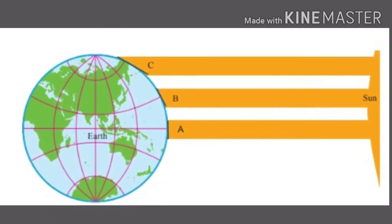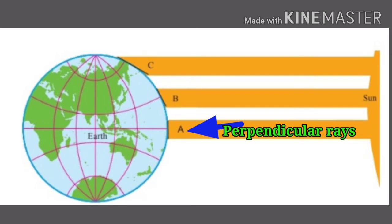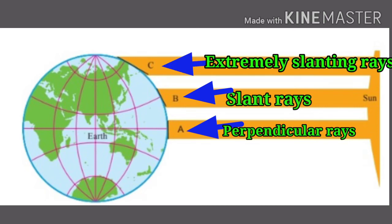The region marked A in the figure receives perpendicular rays, while the region marked B receives slant rays, and the region marked C receives extremely slanting rays.